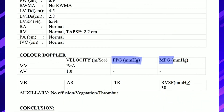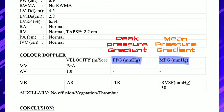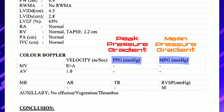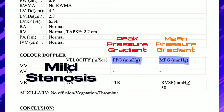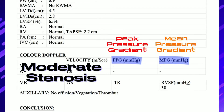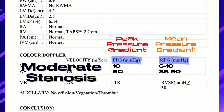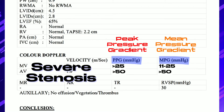Next are PPG and MPG — peak pressure gradient and mean pressure gradient. The gradient study is used to determine the severity of valve stenosis, which happens in heart valve disease. The normal gradient value for the mitral valve is 0, and for the aortic valve it is less than 5. In mild stenosis, the MPG for the mitral valve is between 1 to 5, and for the aortic valve it's between 6 to 25. In moderate stenosis, the MPG for the mitral valve is between 6 to 10, and for the aortic valve it's between 26 to 50. In severe stenosis, the MPG for the mitral valve is more than 25, and for the aortic valve it's more than 50.